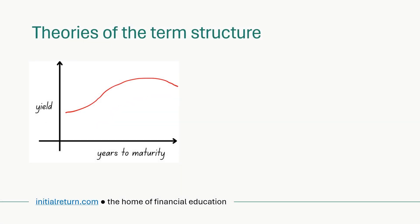With this video we are starting a new series on the term structure of interest rates. It is essentially the yield curve, which tells us how bond yields change with the years to maturity. Here we have a hump-shaped yield curve, but sometimes you will get a flat one, an upward sloping one, or a downward sloping one. So how can we explain these different shapes of yield curves — what's the economics behind that?